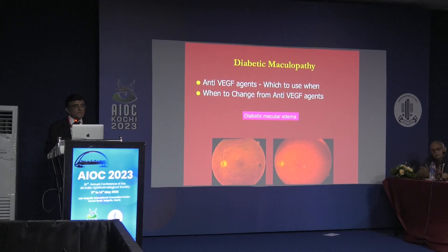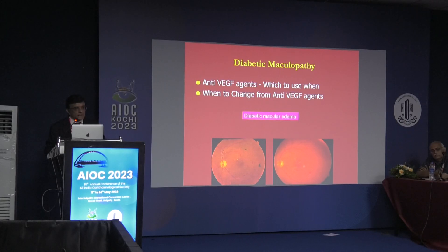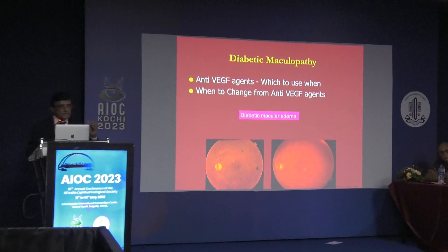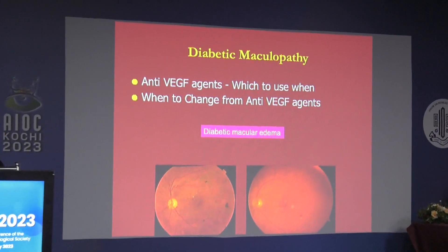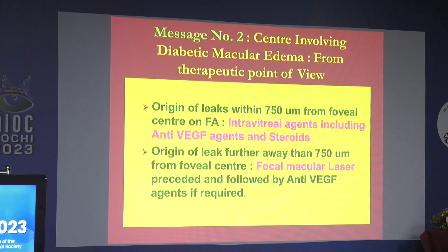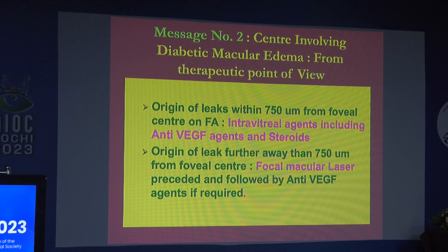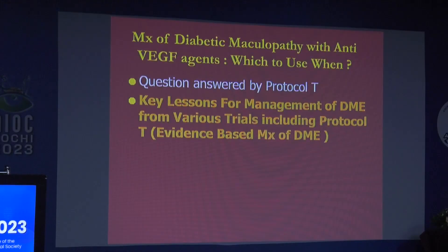In diabetic macular edema, it is important to identify whether it is center-involving or non-center-involving. A center-involving diabetic macular edema must be treated by anti-VEGFs. According to ETDRS, if the lesion is between 500 to 3000 microns — and Dr. Dinesh believes it should be 750 to 3000 microns — you can do focal laser. If it is within 750 microns, one must treat with anti-VEGF.